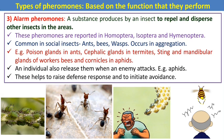Next, alarm pheromones — a substance produced by an insect to repel and disperse other insects in the area. This is reported in Homoptera, Isoptera, and Hymenoptera orders, and is most common in social insects like ants, bees, and wasps. Examples include poison glands in ants, cephalic glands in termites, stings and mandibular glands of worker bees, and cornicles in aphids.